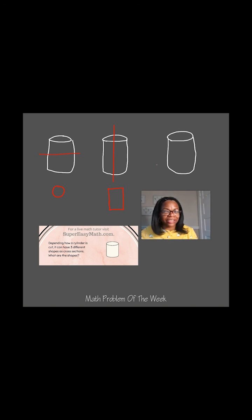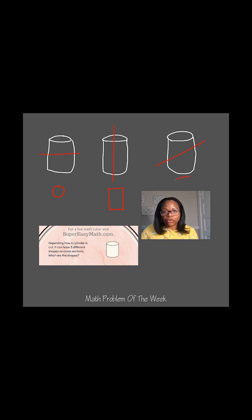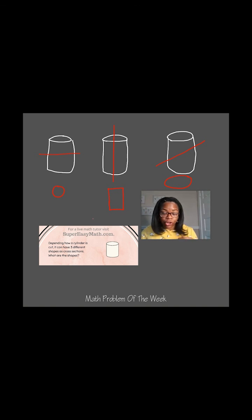The last cross section that you could create would come from cutting the cylinder diagonally. If you were to open or take apart the two pieces of the cylinder and look down, it would appear like an oval. So for this cut, if you were to take the top and the bottom portion of the cylinder apart and look inside, you would see an oval cross section.